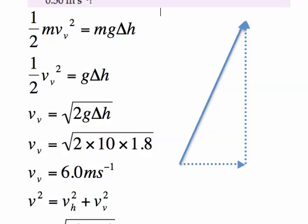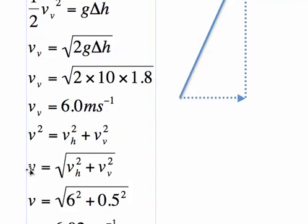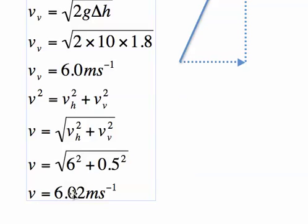He has 0.5 meters per second horizontally so his speed will be the magnitude of this vector here and we find that using Pythagoras. So the total v works out to be 6.02 meters per second by Pythagoras. So that's the speed that he needs to leave the ground with at that angle.